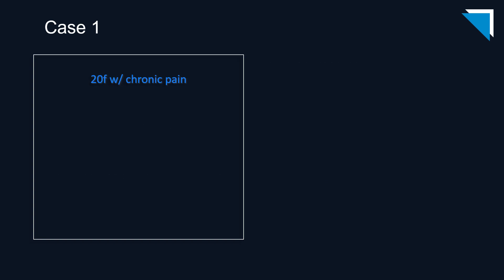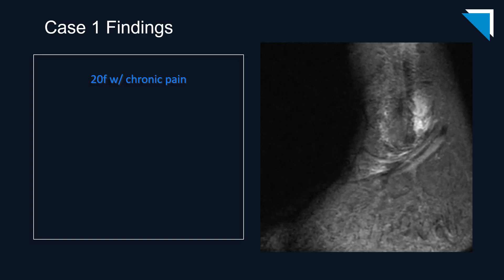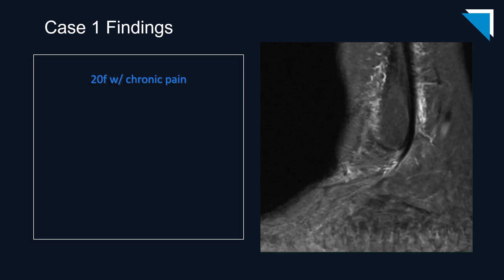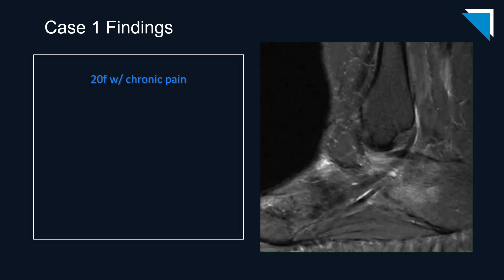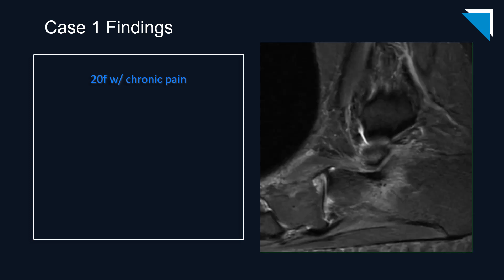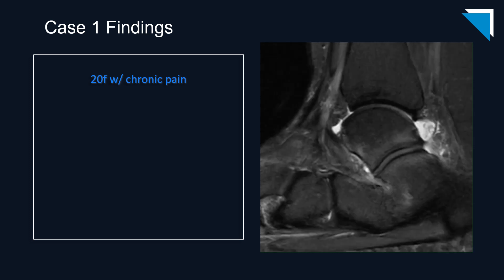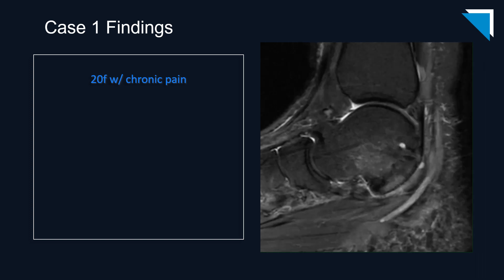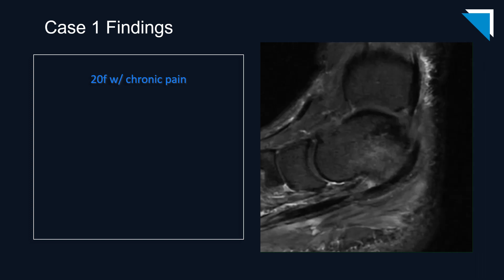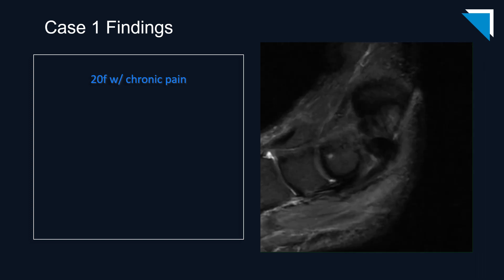Our first patient is a 20-year-old woman with chronic pain. Let's begin by scrolling through the sagittal images from an MRI of an ankle. This is a fluid-sensitive sequence. You can see the ankle joint effusion.